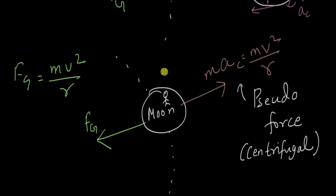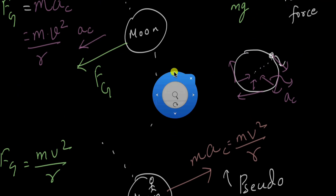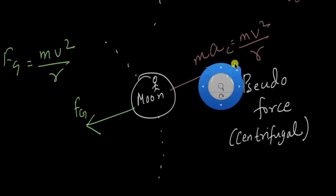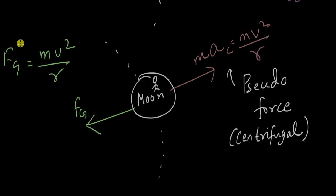If you simply think of centrifugal force as an actual force, you might end up thinking that the acceleration of the moon is zero, which is completely not true. We saw that the moon does accelerate — there is an acceleration towards the center of the earth. Centrifugal force is just a way to make Newton's laws work and to get the correct equation without drawing the free body diagram in an inertial frame.